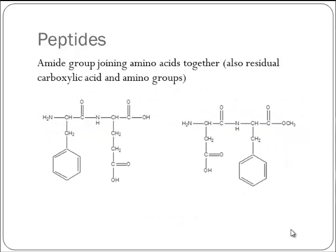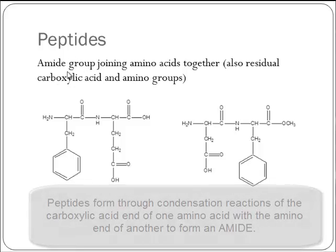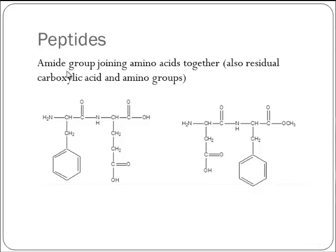Amino acids have carboxylic acid and amino groups. A peptide is simply made out of amino acids that have joined together. When they join, they undergo a condensation reaction and form an amide — much like the reaction when you made the polymer nylon in the laboratory. There's always going to be an amide group joining the amino acids together. We end up with a remaining carboxylic acid group and a remaining amino group. Let's find the amide groups: C double bond O, and then that same C is single bonded to a nitrogen.